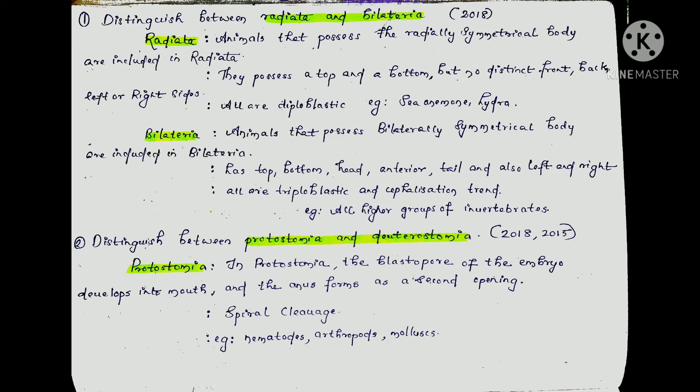Now there is another evolution trend called Cephalization. Cephalization is associated with bilateral symmetry. Cephalization refers to the concentration of sensory organs and the head at the anterior end. This is seen in higher groups of invertebrates and vertebrates, like human beings, which show bilateral symmetry.